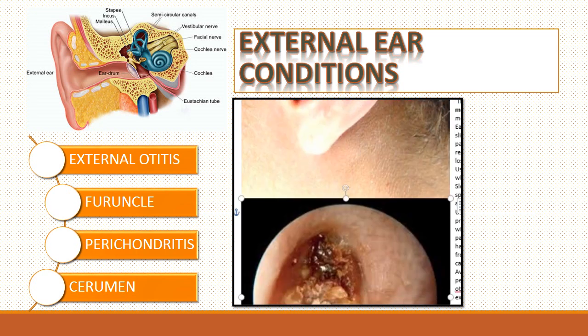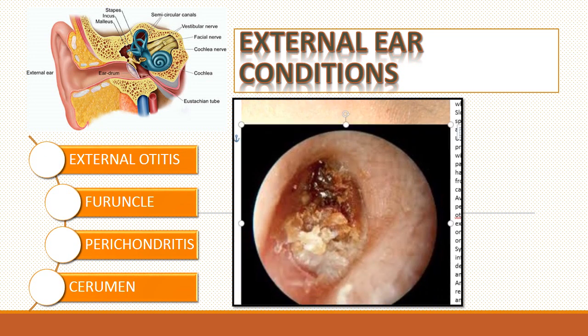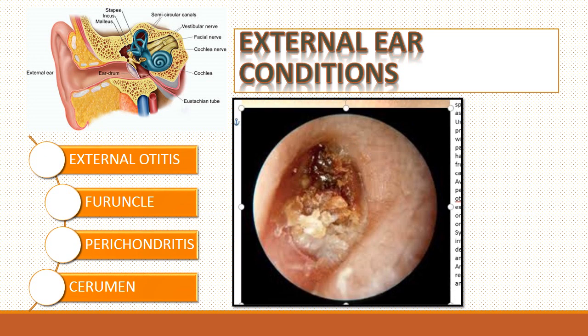A foreign body or cerumen in the ear is the most common cause of an impacted ear canal, though it can also occur when children insert vegetables, beads, pencil erasers, or insects into their ears. Removal of the obstruction by irrigation may improve hearing. Do not irrigate an ear with an eardrum perforation or otitis media present, or when the foreign object is vegetable matter, as the material may expand when wet.